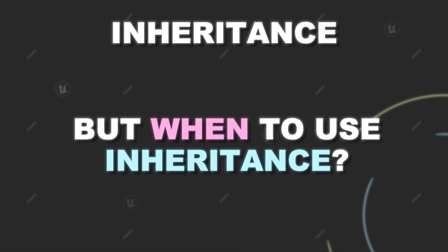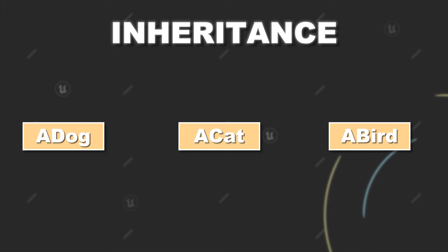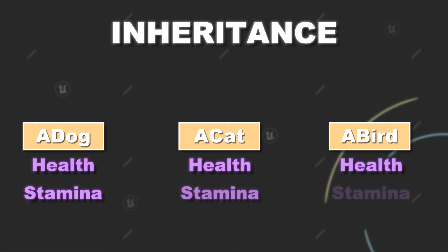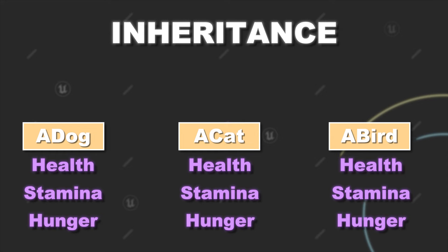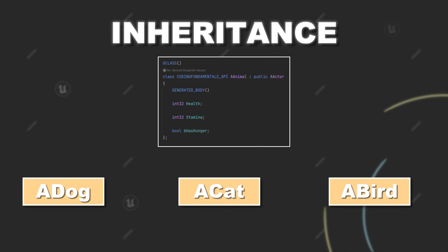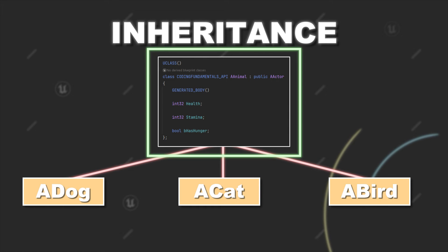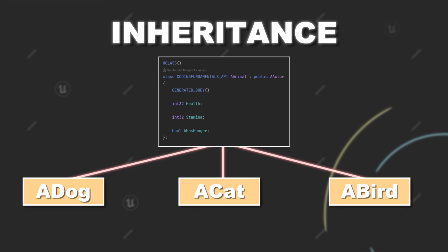But when does using inheritance make sense? Let's say in your game you have various animals: dogs, cats, birds. You will see that they share some similar concepts. Probably you would implement health for them, maybe also a stamina system or functionality for hunger. So it makes sense to implement those functionalities in a superclass Animal and then let the other animal types inherit from this class. Then if you want to change how you handle your animal health, you can do it in one place instead of in each individual animal class.